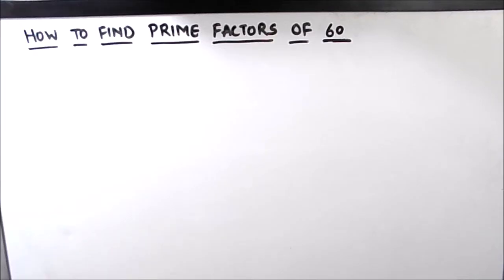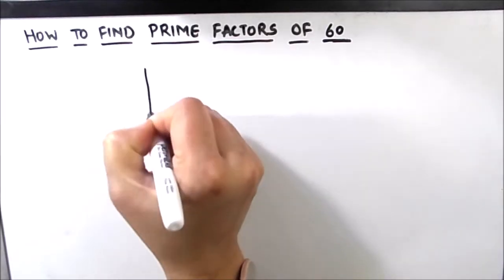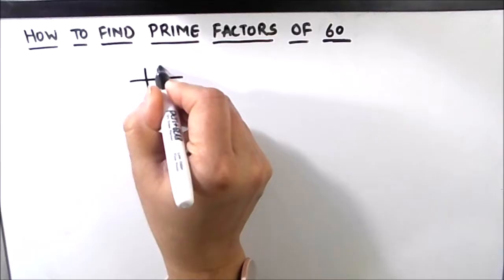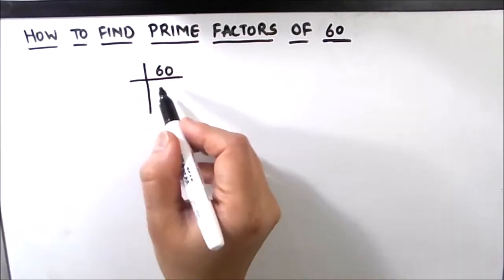We are going to use the prime factorization method for finding the prime factors of this number. In this method we divide the number by prime numbers and find the factors of this number. If the number 60 is fully divisible by the numbers we are dividing, then the number is the prime factor of number 60.